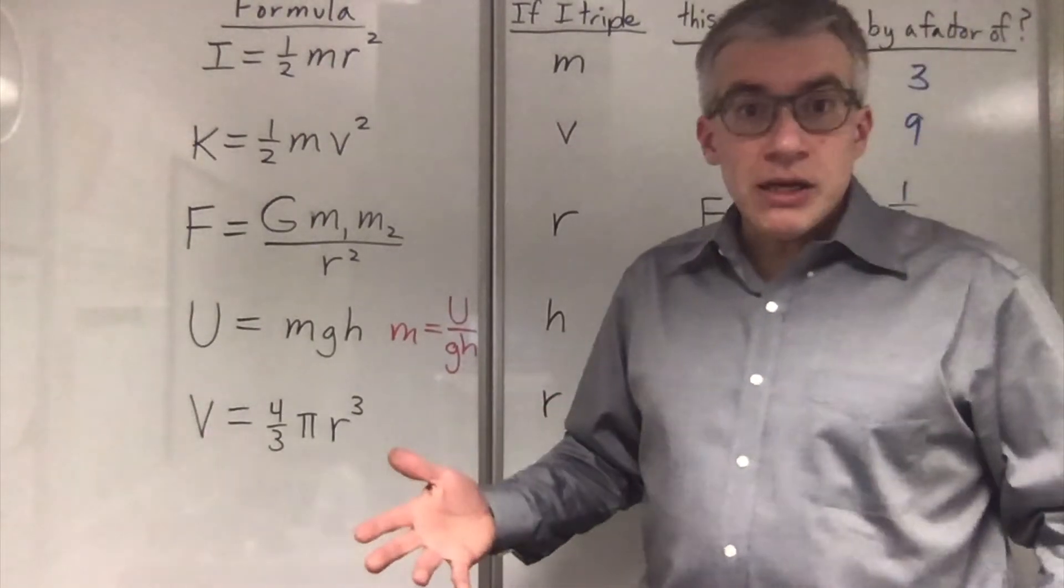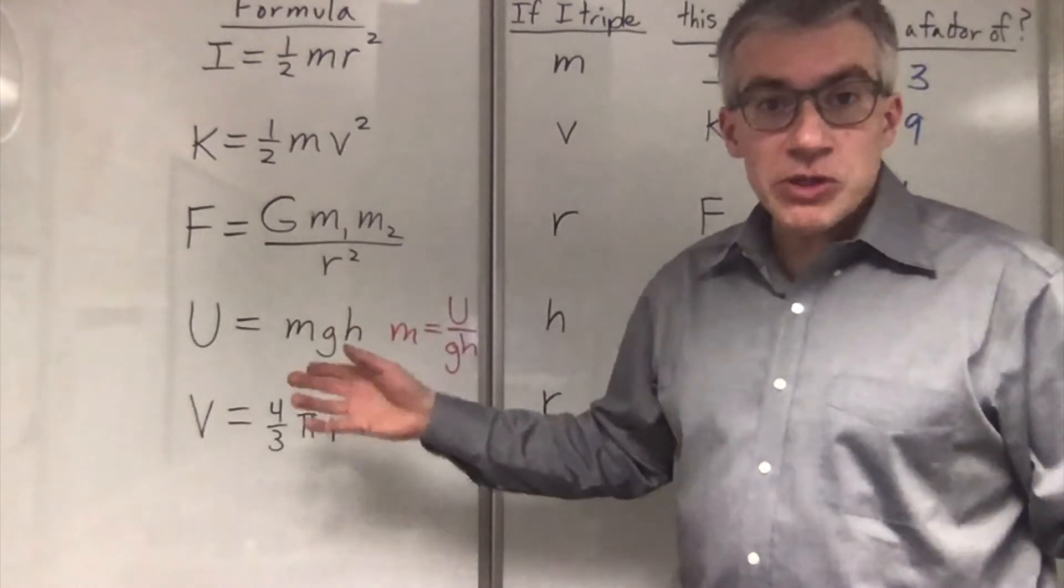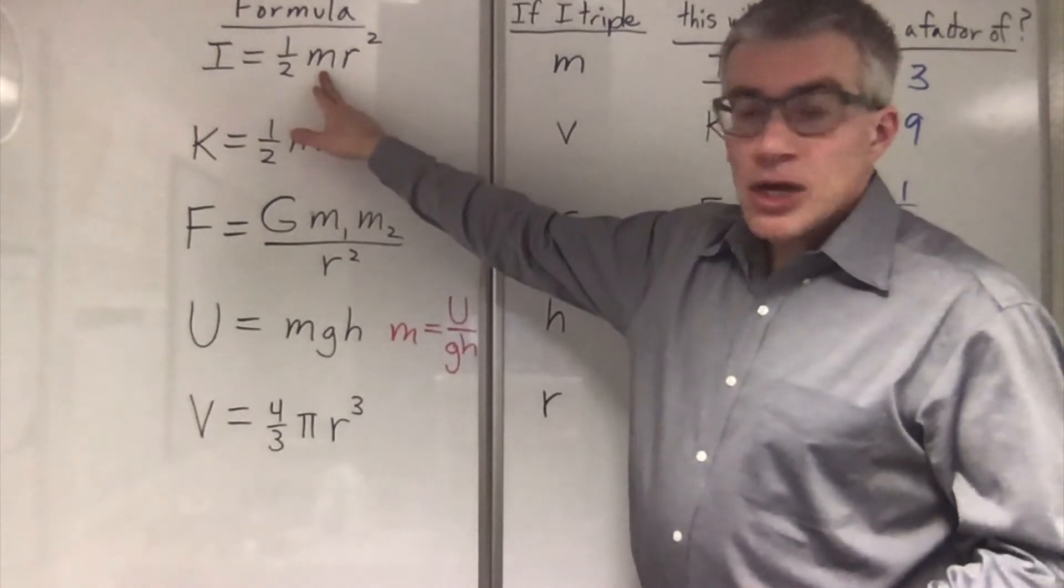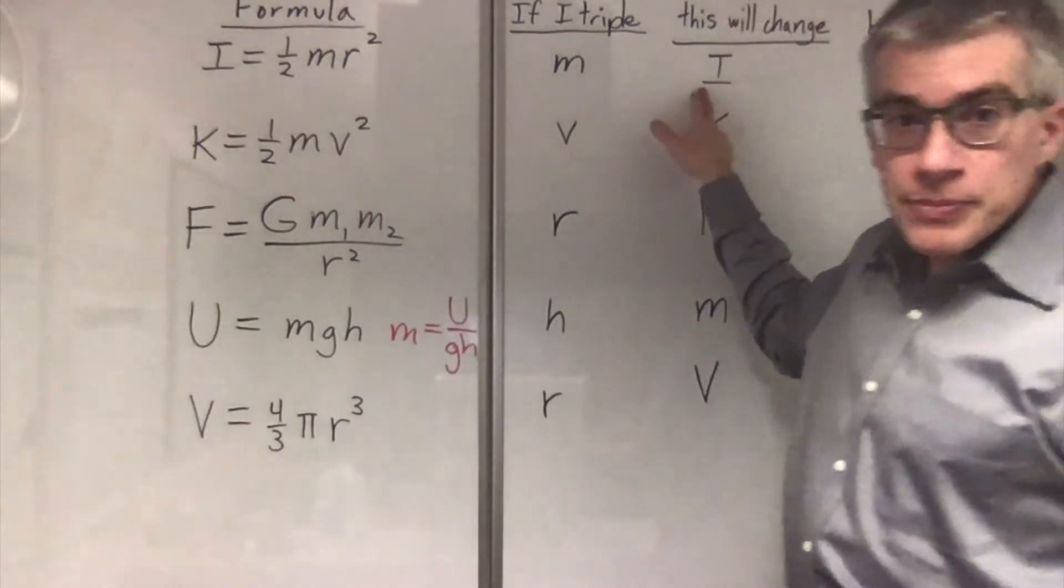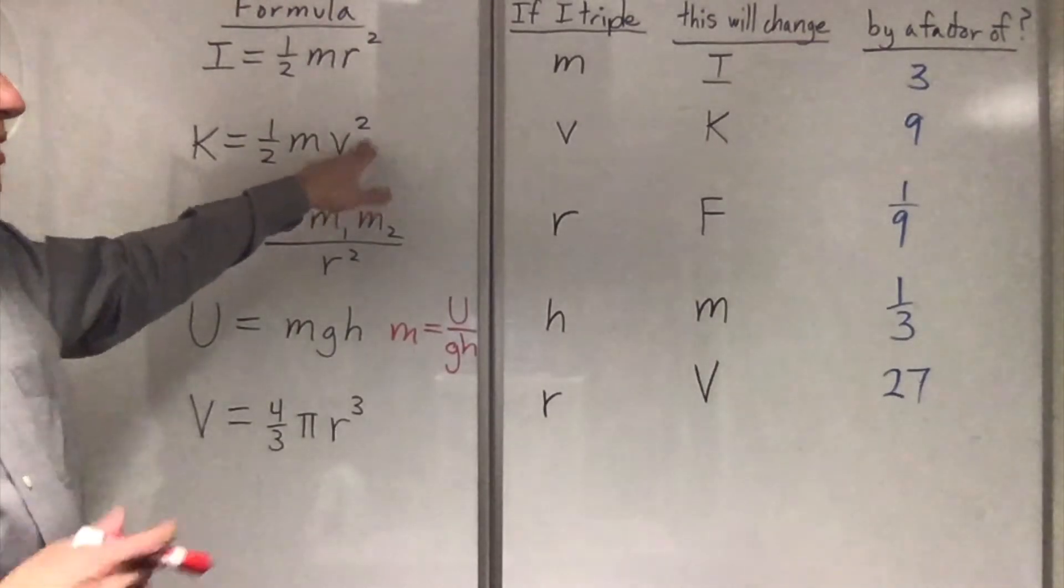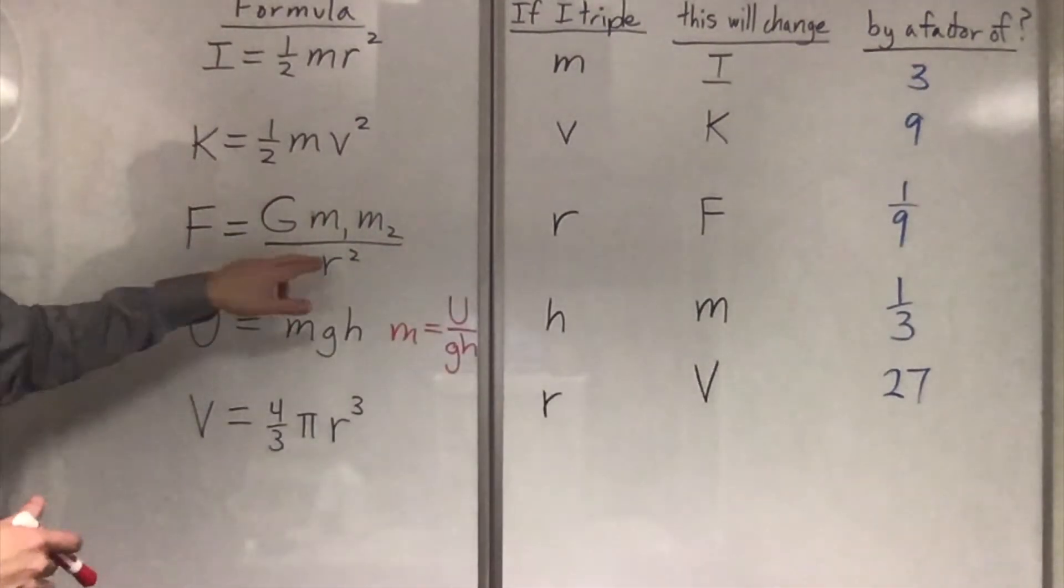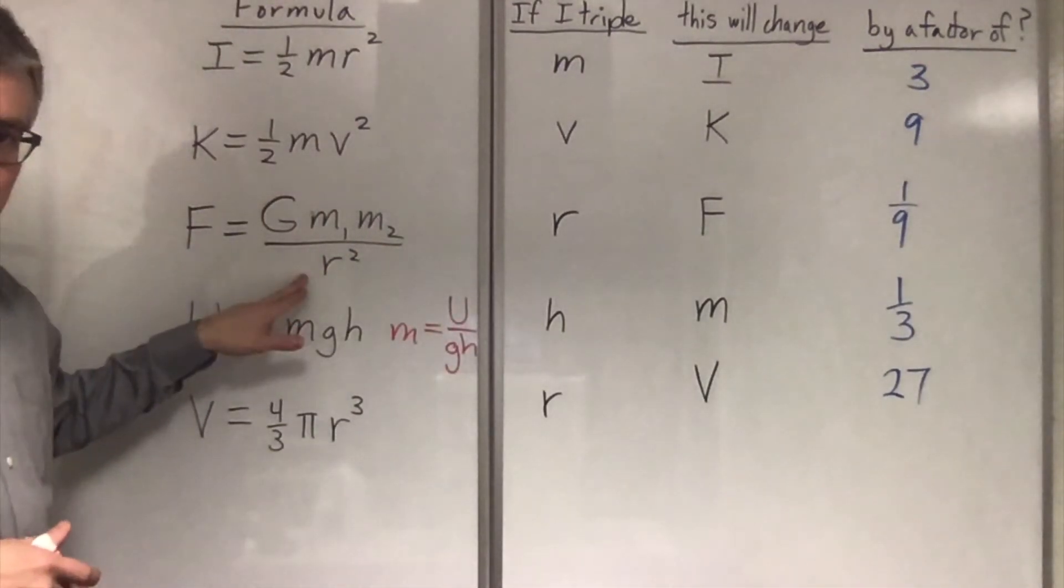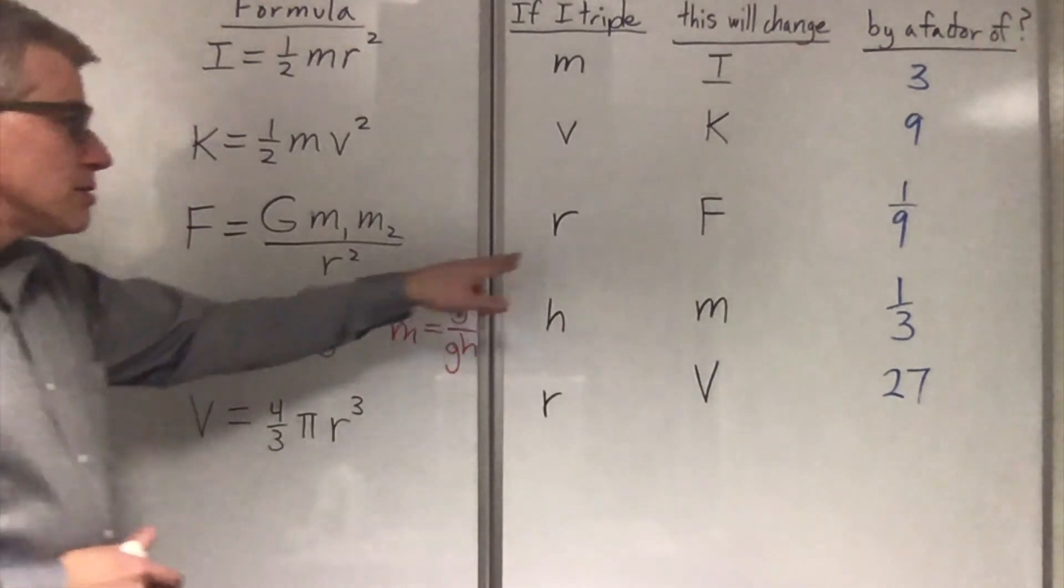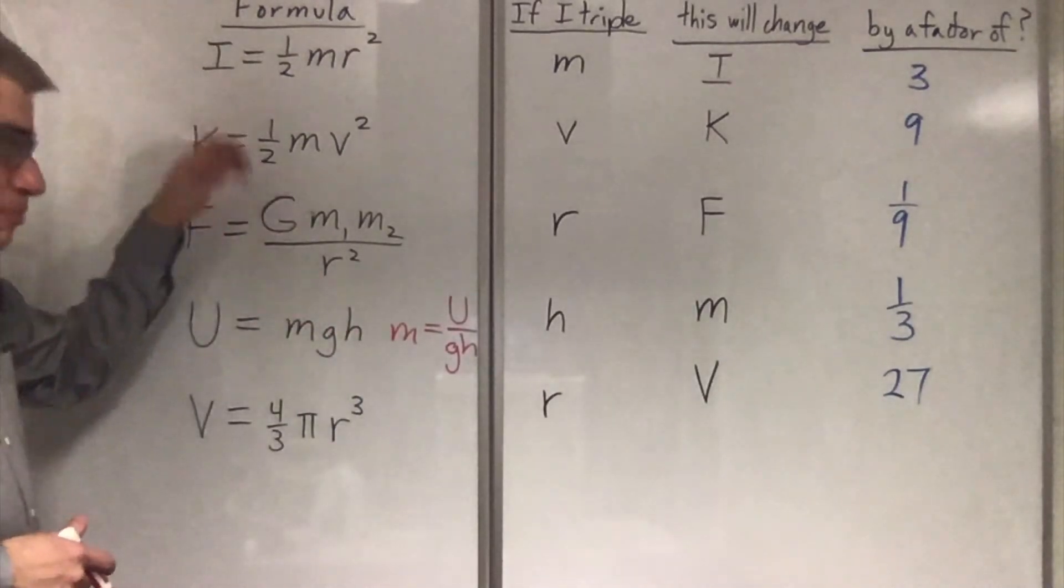How many factors of three? Well, that's going to depend on what power the variable is raised to. So since this m was just m to the first, if I triple this, I triple that. And because this v was squared, I'm going to get three squared over here. And because this r was on the bottom, that's why it was a one ninth instead of a nine. Because that r is getting squared. r is what we're changing. It's getting tripled. So we're getting times nine on the bottom. So one ninth.